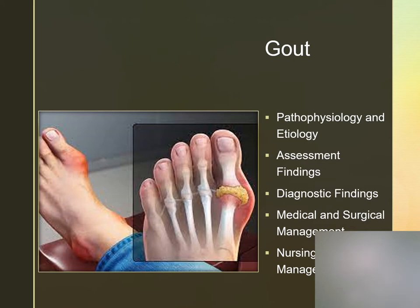We can do a uric acid blood test to help diagnose along with a urine test, an arthrocentesis, or sometimes radiology will show us some good pictures. These clients will be treated with uric acid drugs and a decreased ingestion of purine in their diet. They may take NSAIDs, colchicine, phenylbutazone, or maybe require surgery.